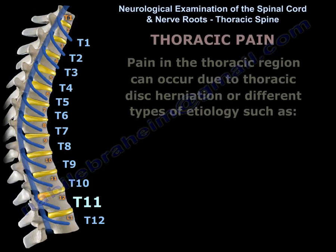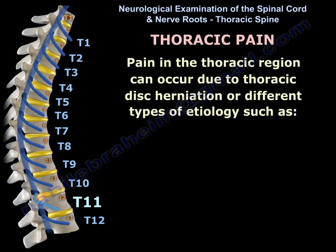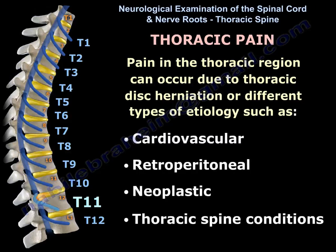Pain in the thoracic region can occur due to thoracic disc herniation or different types of etiology such as cardiovascular, retroperitoneal, neoplastic, or thoracic spine conditions.